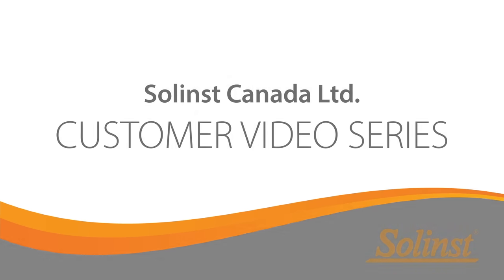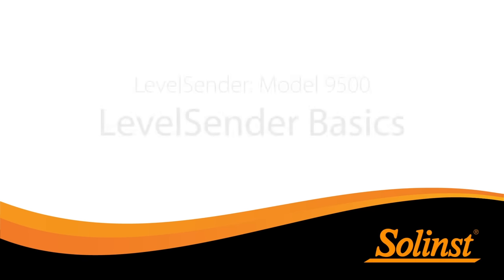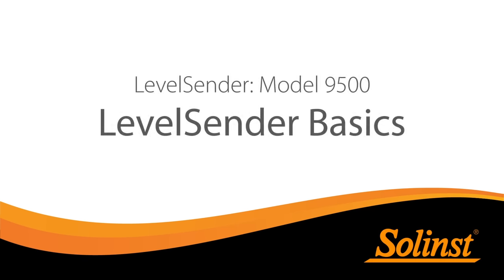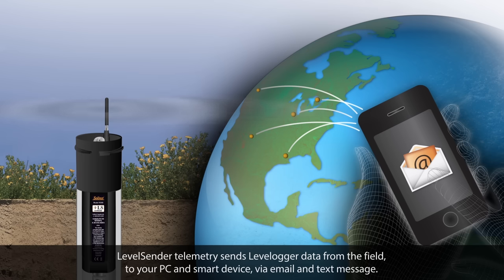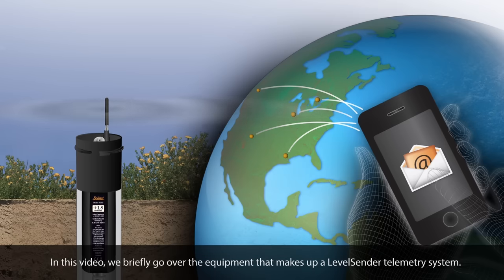Welcome to the first video in our series focused on the Level Sender Telemetry System. Level Sender Telemetry is a simple, compact system that sends level logger data from the field to your PC and smart device via email and text message. In this video, we will briefly go over the equipment that makes up a Level Sender Telemetry System.